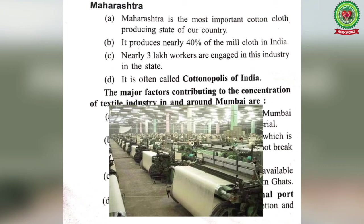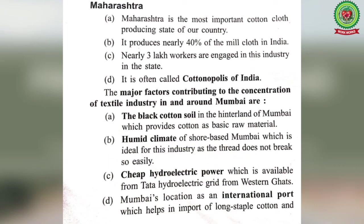Maharashtra is one of the most important cotton textile industrial states in India. It is the most important cotton cloth producing state in the country, producing nearly 40% of the mill cloth in India. Nearly 3 lakh workers are engaged in this industry in the state. It is often called the Cotton Police of India.